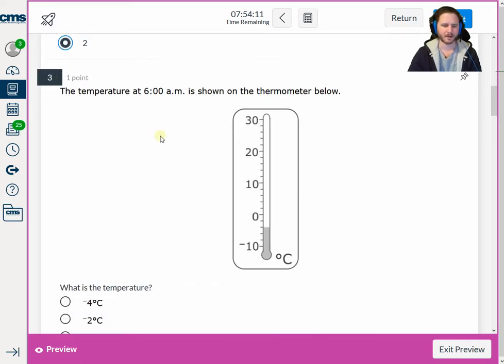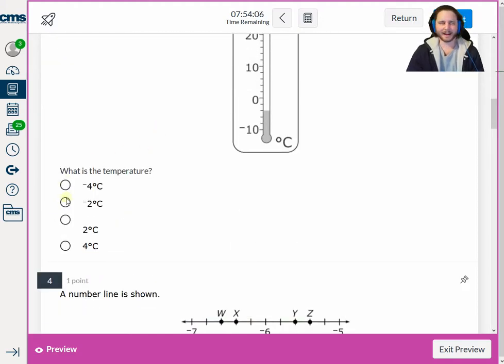For number 3, what is the temperature? The answer to this one is actually going to be negative 4. The way you can tell is look at how many tick marks there are again. We've got 0, 1, 2, 3, 4, 5 tick marks later, and we're already at negative 10. They're counting by 2's again. So 0, negative 2, negative 4. That's where we're at for this problem.